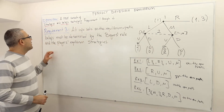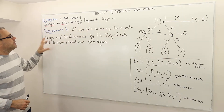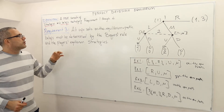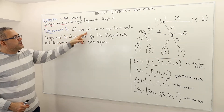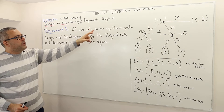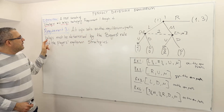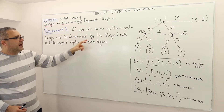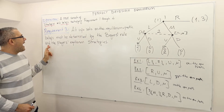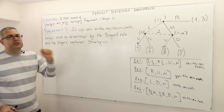Now we talk about the third requirement. At information sets that are on the equilibrium path, beliefs must be determined by Bayes' rule and the player's equilibrium strategies.